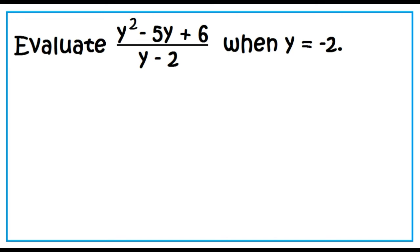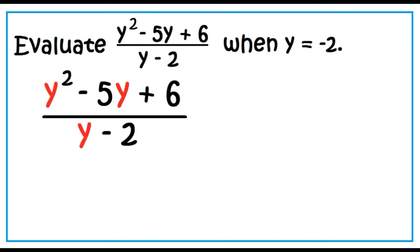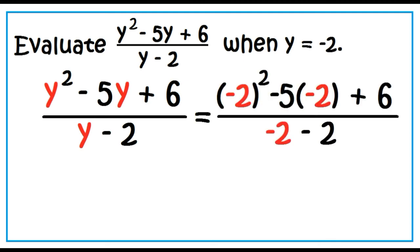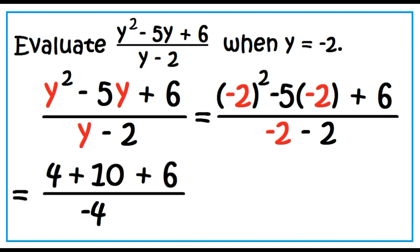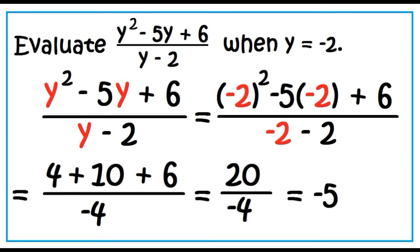Evaluate the quantity y squared minus 5y plus 6 divided by the quantity y minus 2 when y equals negative 2. Substitute negative 2 for y, then perform the indicated operations. The square of negative 2 is 4. 5 times negative 2 is negative 10, and the opposite of negative 10 is positive 10. Negative 2 minus 2 is negative 4. 4 plus 10 plus 6 is 20, divided by negative 4 is equal to negative 5.